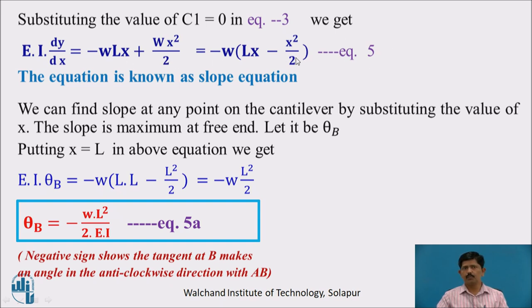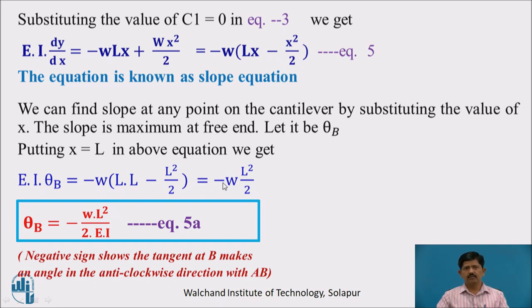We can find the slope at any point on the cantilever by substituting the value of x. For slope at the free end (theta_b), substituting x = L: EI·theta_b = −W(L·L − L²/2) = −WL²/2. Therefore, theta_b = −WL²/(2EI) (Equation 5a). The negative sign shows the tangent at B makes an angle in the anticlockwise direction with line AB.